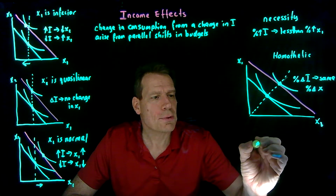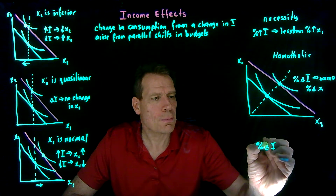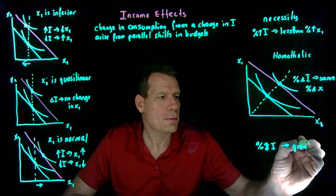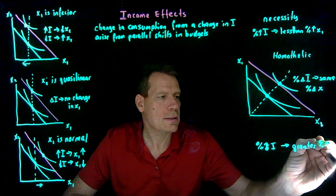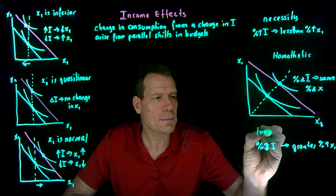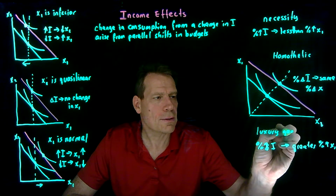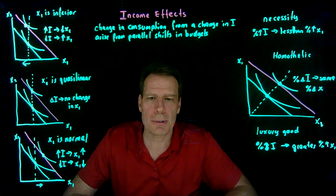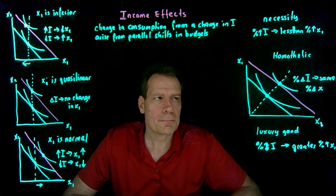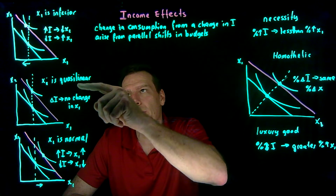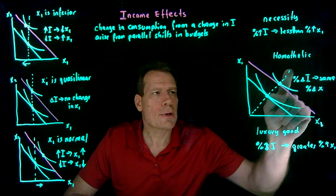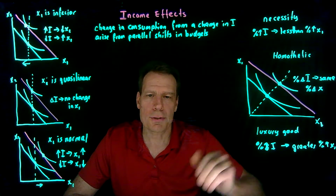Or we may have a good where a percentage increase in income will cause a greater percentage increase in x1. In that case, we would say that x1 is a luxury good — the kind of good where your income goes up by 10%, but now you spend 20% more on x1 or something like that. So just as quasi-linear goods were borderline between inferior and normal, homothetic tastes create a borderline between necessities and luxury goods.